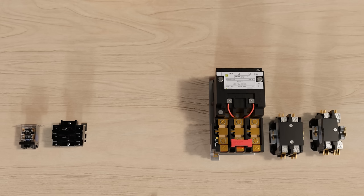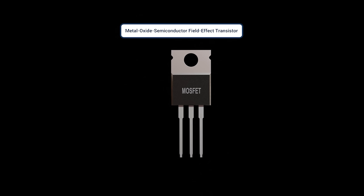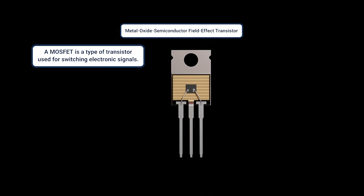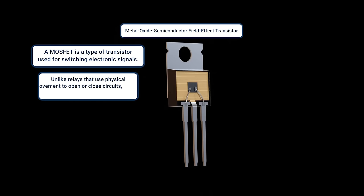Now let's delve deeper into some other types of HVAC controls that operate similarly to relays. One example of an electronic control is a MOSFET, which stands for Metal Oxide Semiconductor Field Effect Transistor, which is a type of transistor used for switching electronic signals. It is not the only type, but we're using it as an example here. Unlike relays that use physical movement to open or close circuits, MOSFETs switch electronically.